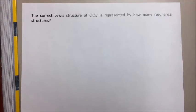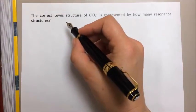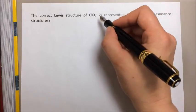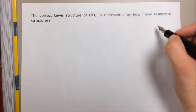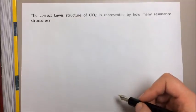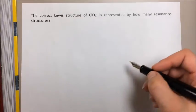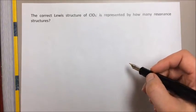In the multiple choice portion of exam two, you were asked, the correct Lewis structure of the chlorate ion is represented by how many resonance structures? Well, the first thing we've got to do is draw a Lewis structure.